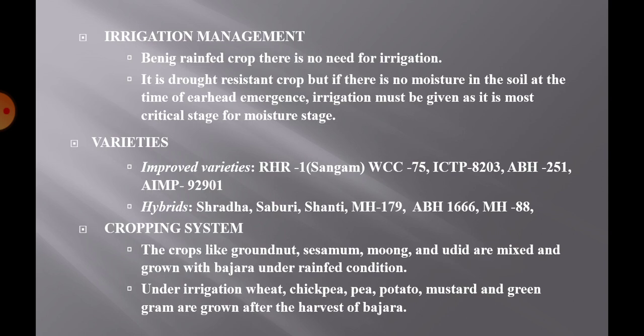Being a rain-fed crop, there is generally no need for irrigation. It is a drought-resistant crop, but if there is no moisture in the soil at the time of ear head emergence, irrigation must be given as this is the most critical stage for moisture stress. Pearl millet does not tolerate waterlogging, so do not allow rainwater to stand in the field and provide proper drainage for excess water.